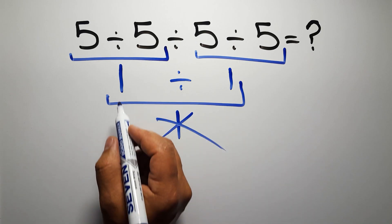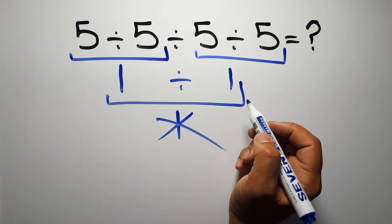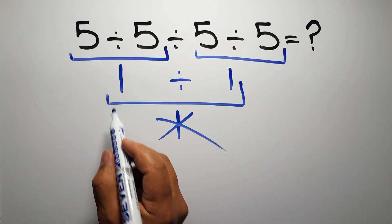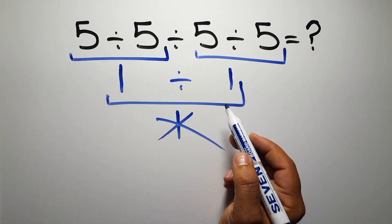Because according to the order of operations, when we have more than one division in an expression, we have to work from left to right. So here first we have to do this division, then this division, and finally this division.